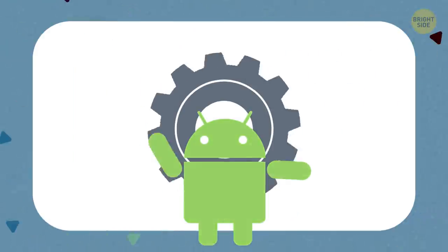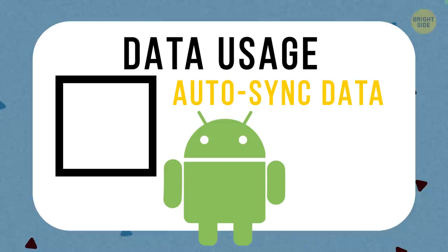On most Androids, you can uncheck Auto Sync Data in Settings, Data Usage.